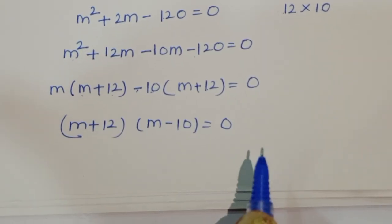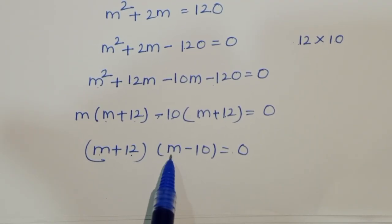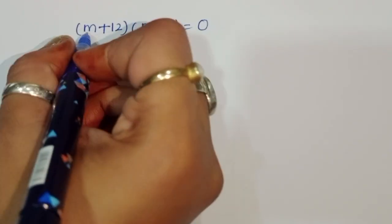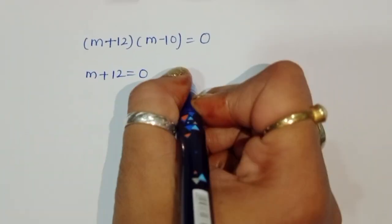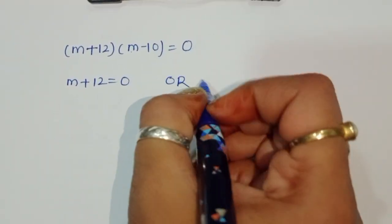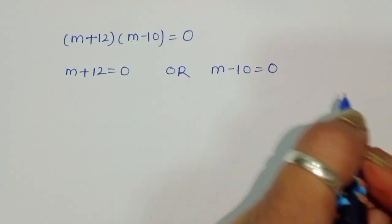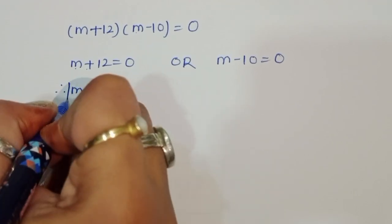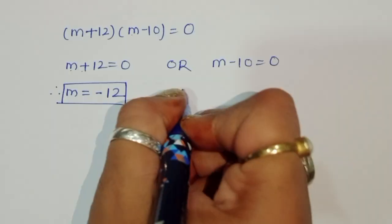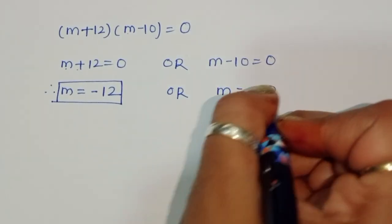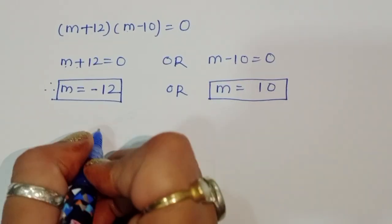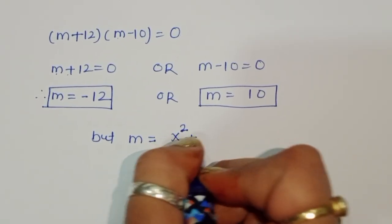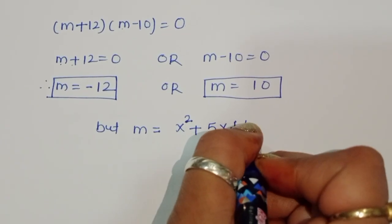Therefore (m + 12)(m - 10) = 0, giving us two equations: m + 12 = 0 or m - 10 = 0. So m = -12 or m = 10.